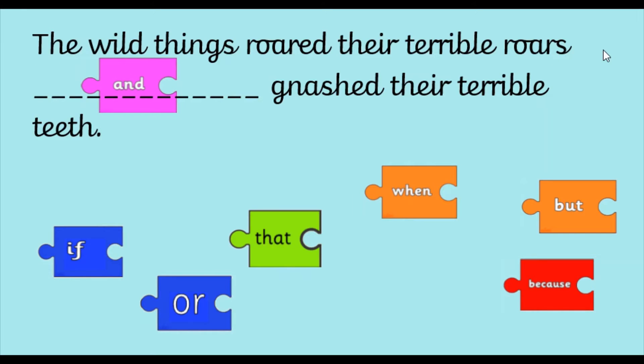The wild things roared their terrible roars and gnashed their terrible teeth. And is used when we're adding some extra information. So the first thing that the wild things did was roared their terrible roars, and the second thing is they gnashed their terrible teeth.